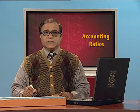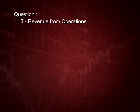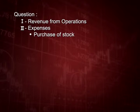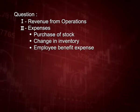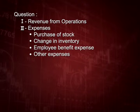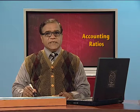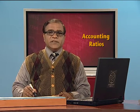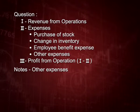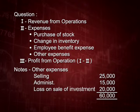Let us start another question on operating ratio. Revenue from operations is 6 lakh. Expenses are: purchase of stock 3 lakh, change in inventory negative 30 thousand, employee benefit expense (wages) 10 thousand, and other expenses 60 thousand, totalling 3 lakh 40 thousand, giving profit from operations of 2 lakh 60 thousand. The notes show other expenses include selling expenses 25 thousand, administrative expenses 15 thousand, and loss on sale of investment 20 thousand.